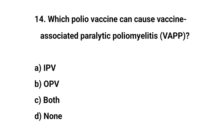Question number 14. Which polio vaccine can cause vaccine-associated paralytic poliomyelitis? The right answer is B: OPV.